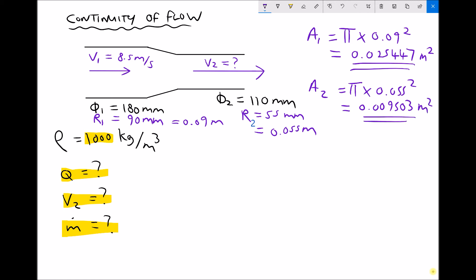Now I'm in a position to calculate my volume flow rate because volume flow rate is velocity times area, and I can use either velocity and area pairing. Well I know V1 and I know A1. So I'm going to use V1A1 where V1 is 8.5 and A1 is 0.025447. Giving me a volume flow rate to four decimal places of 0.2163 meters cubed per second.